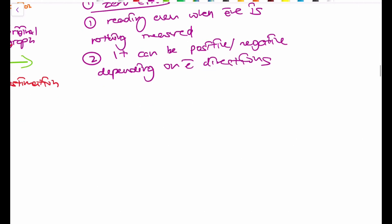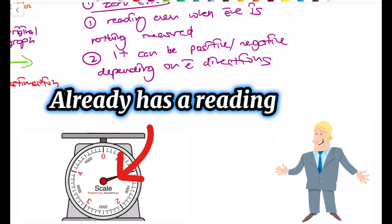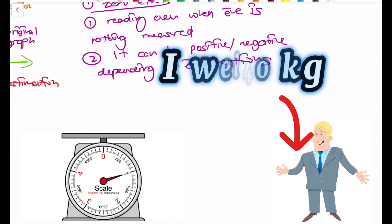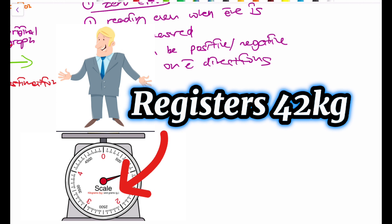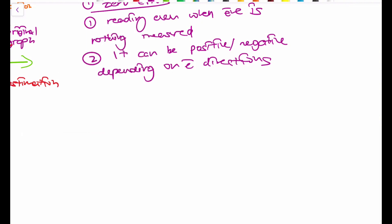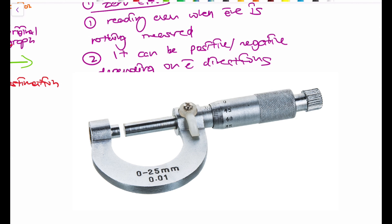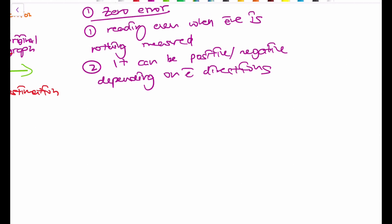For example, you want to measure the mass of an individual. Before you start measuring, the scale already has a reading saying two kilograms. If a person weighs 40 kilograms and they stand on that balance, it's going to register 42 kilograms. Or with a micrometer screw gauge, if before measuring it was already at negative 0.1, the reading you get will be less than the true value - you'd get 4.0 instead of 4.1. It's always going to be constant for all measurements you take.